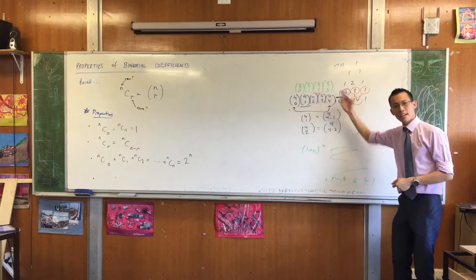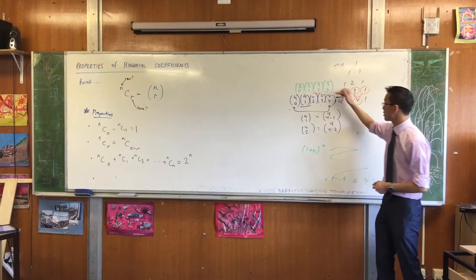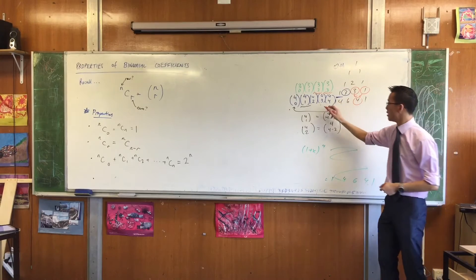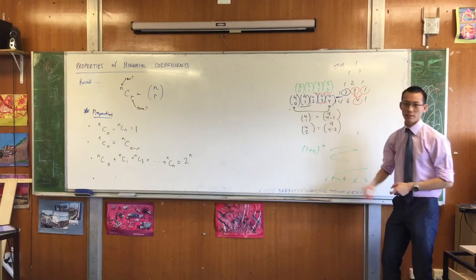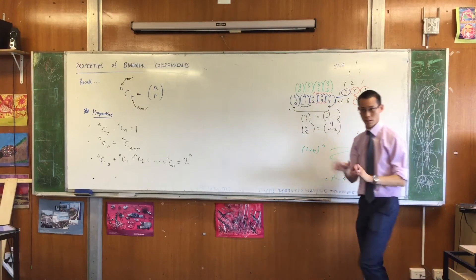Then I've got the one next to it which is 3C3. And then when you add those guys together you get the one that's in between, 4C3. You're okay with that? Okay.